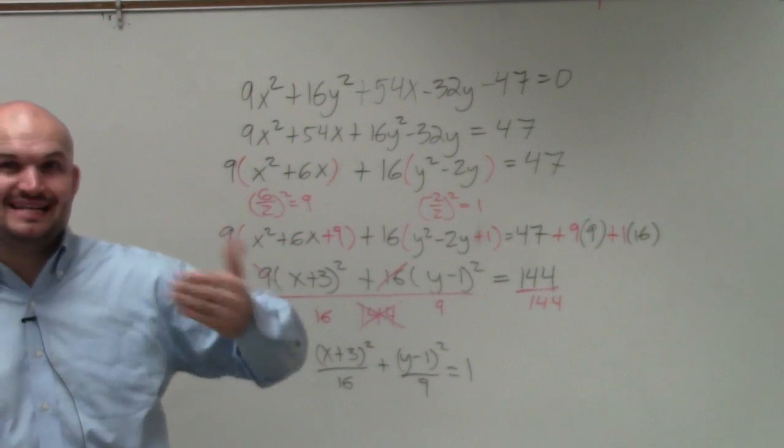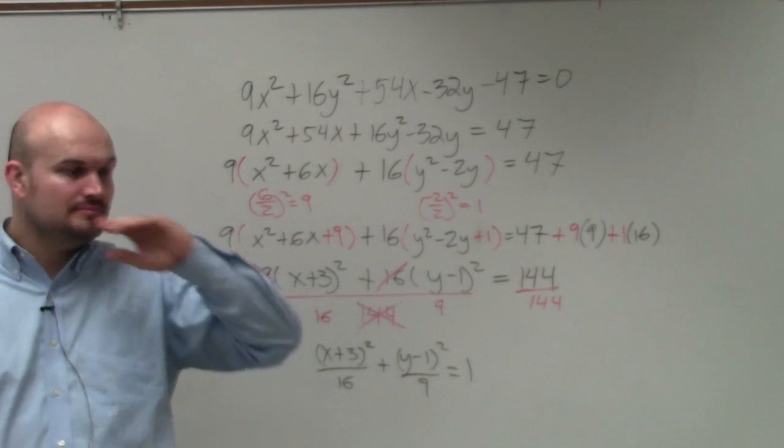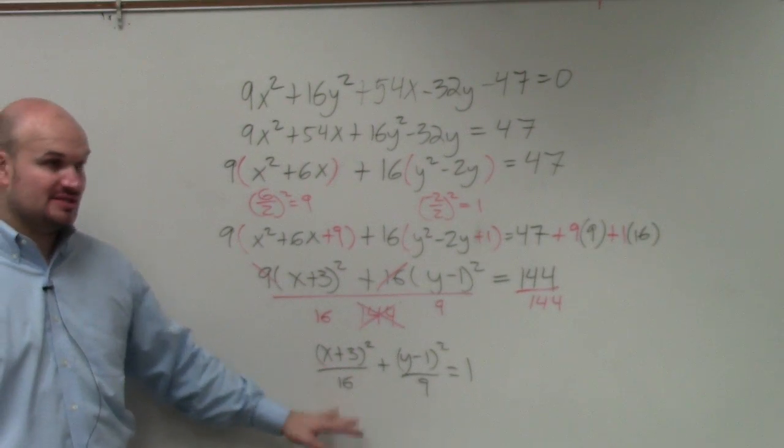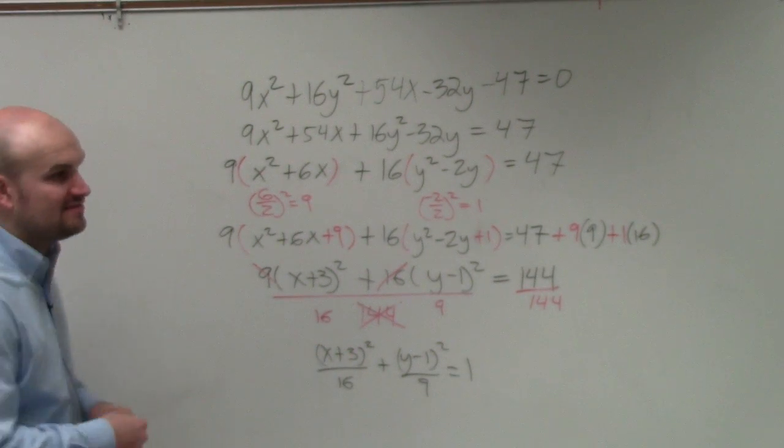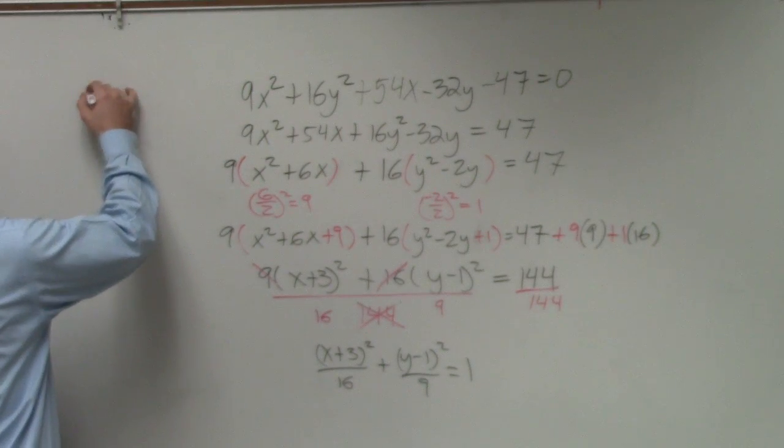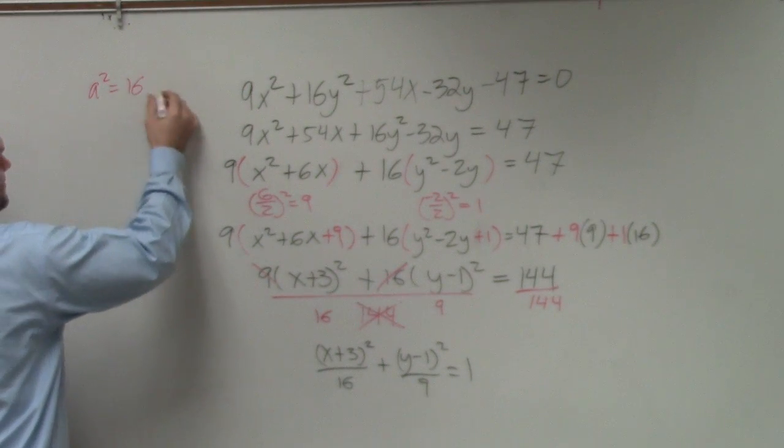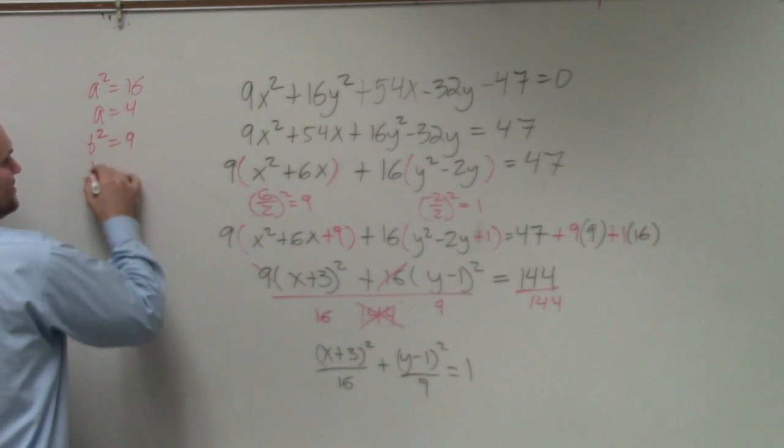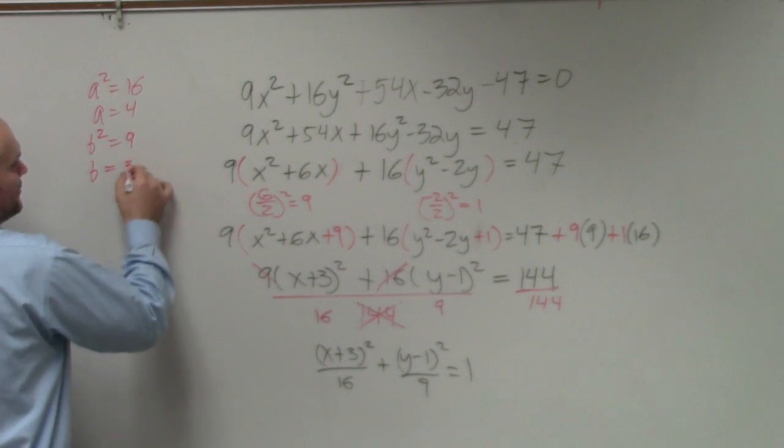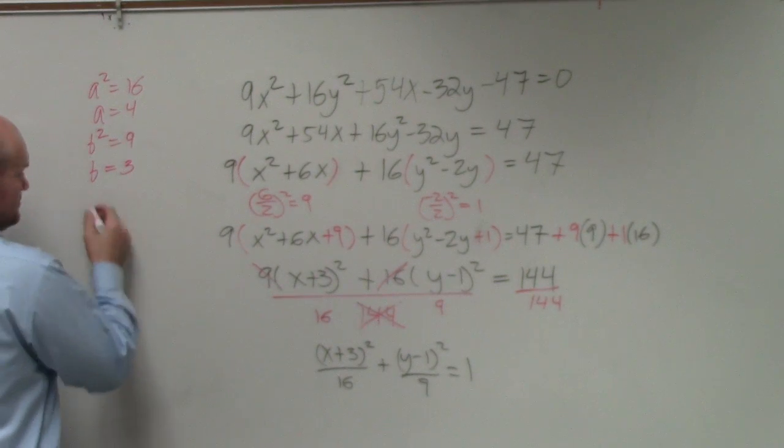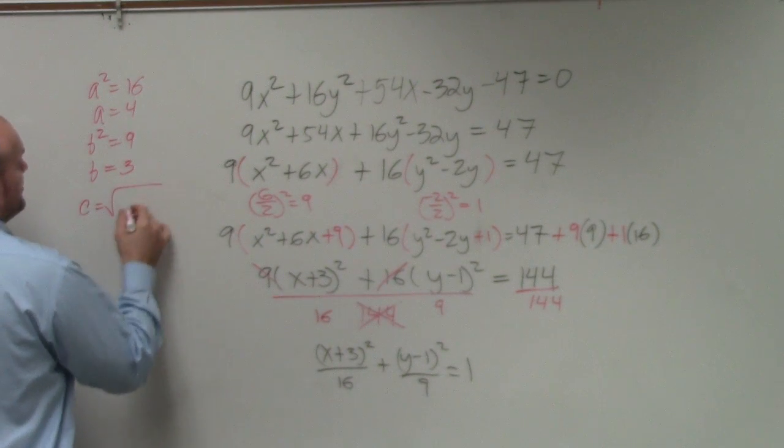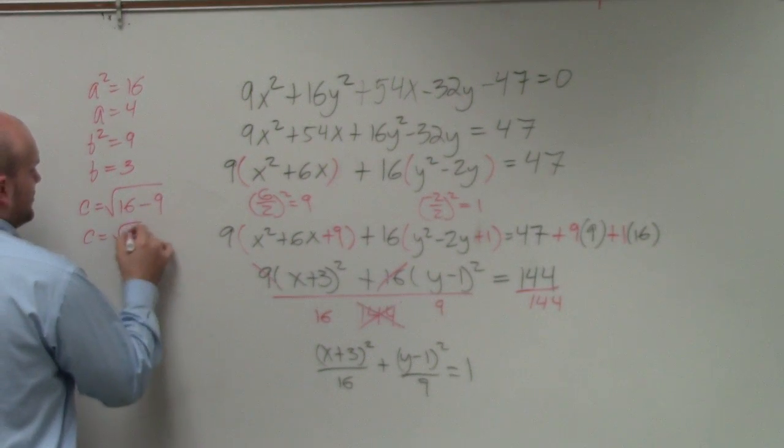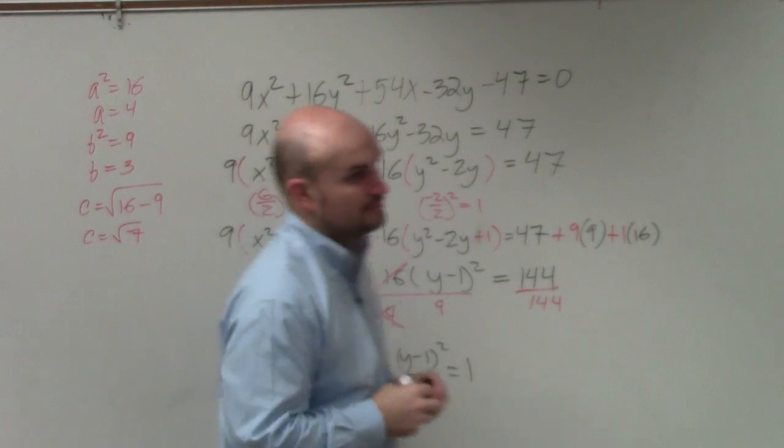Remember, for an ellipse, a is always going to be larger than b. So our a squared in this case is which number, the 16 or the 9? 16. So let's find a and b first. a squared equals 16. So therefore, a equals 4. b squared equals 9. So b equals 3. Can we easily find c? Yeah. c equals the square root of 16 minus 9, which c equals the square root of 7.